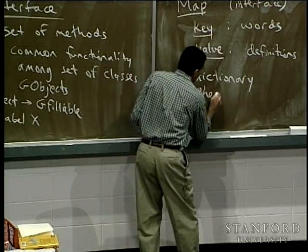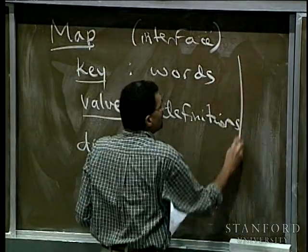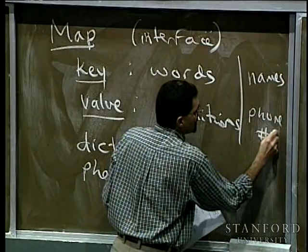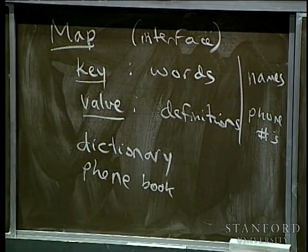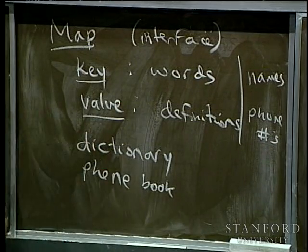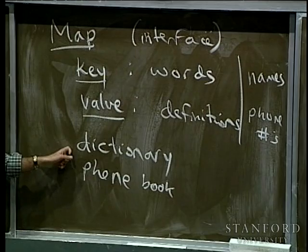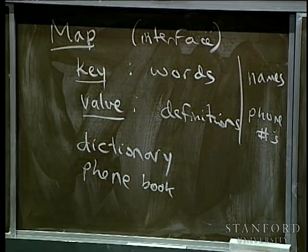When you look things up in a map, you don't look them up by value — you look them up by key. Your phone book is also a map: the keys are names and the values are phone numbers. Maps are all around you in life. A dictionary and a phone book are really the same thing to a computer scientist — they're both maps, because now you know what a map is.